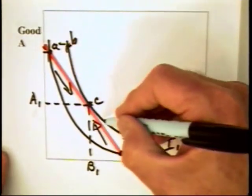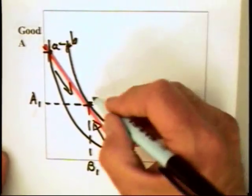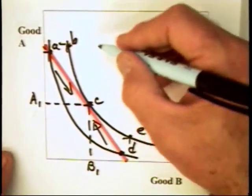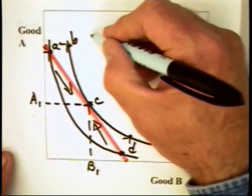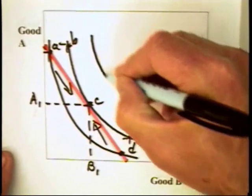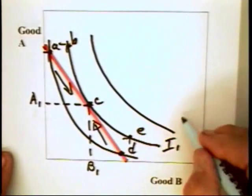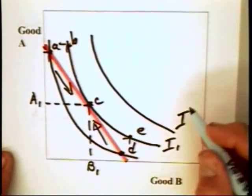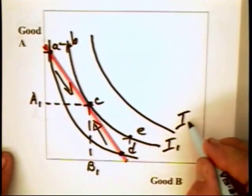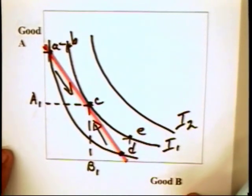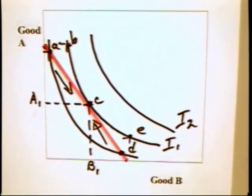This is the point of highest attainable satisfaction by the consumer. The consumer might like to move to a higher indifference curve, but it's outside of the individual's budget constraint.